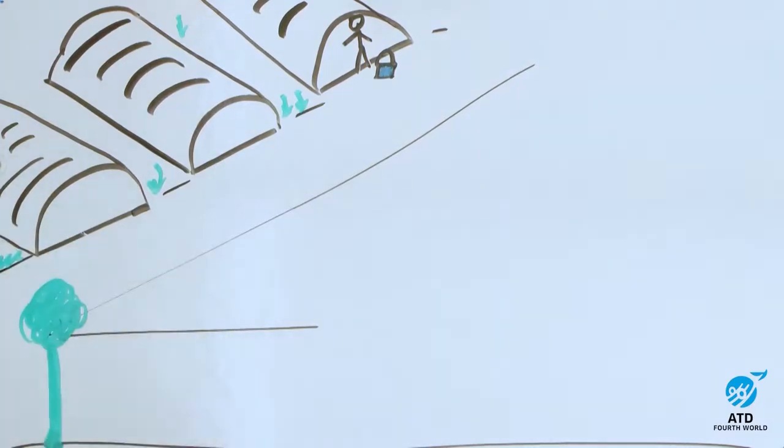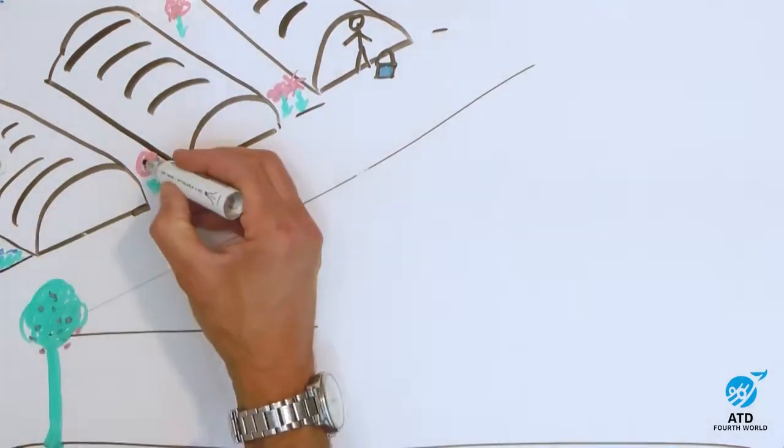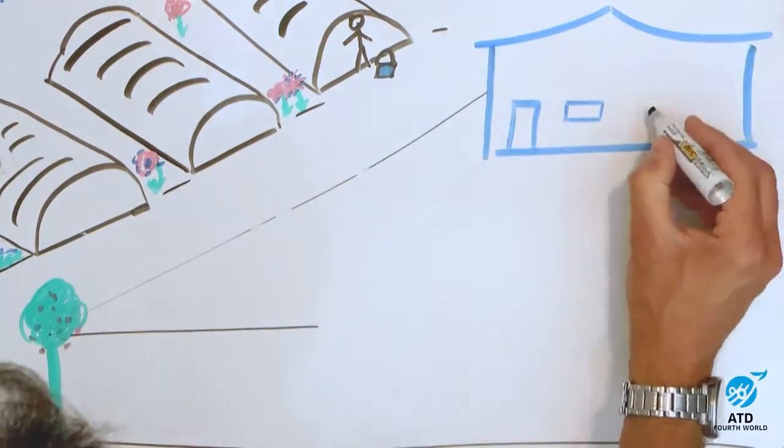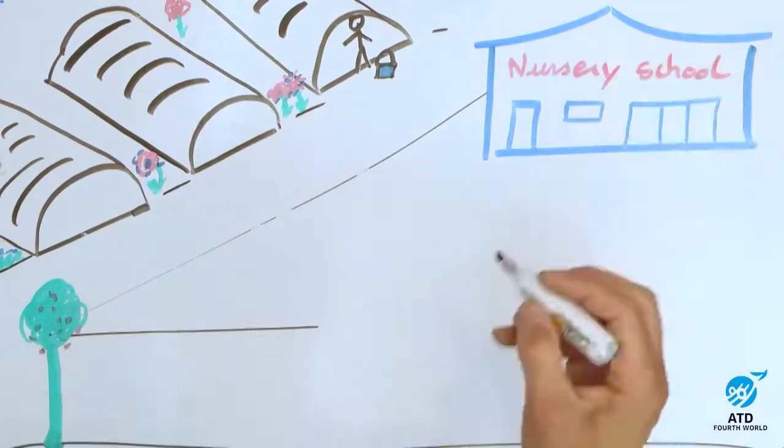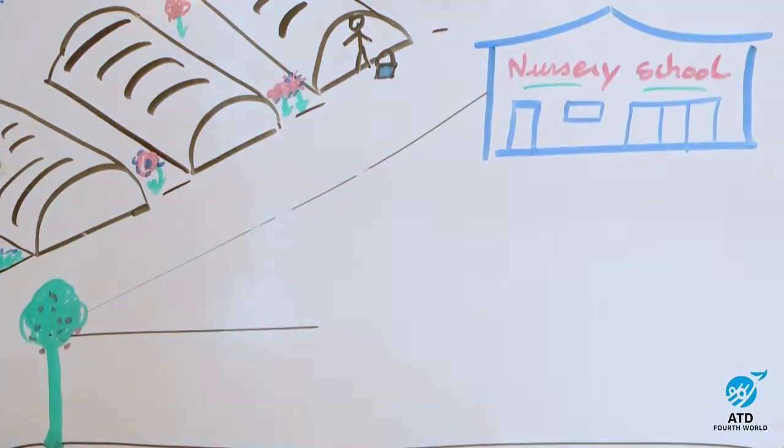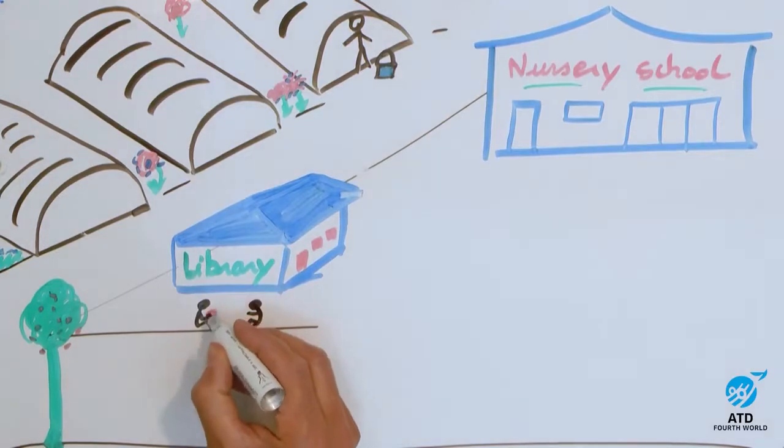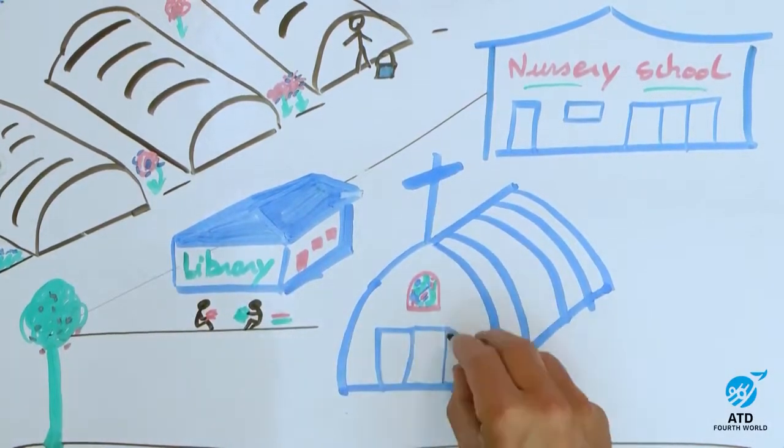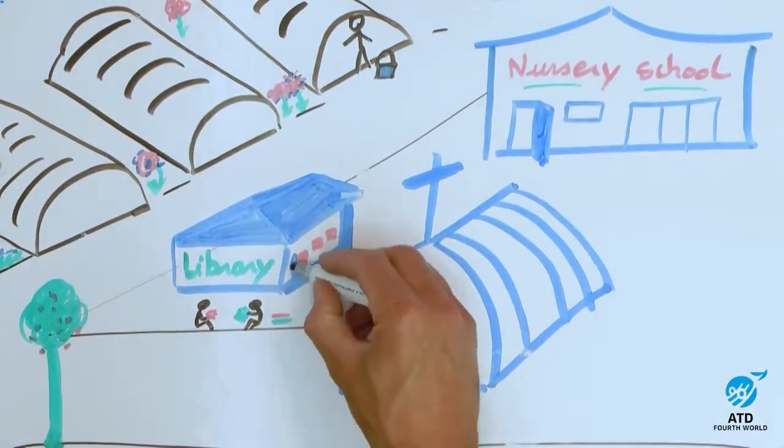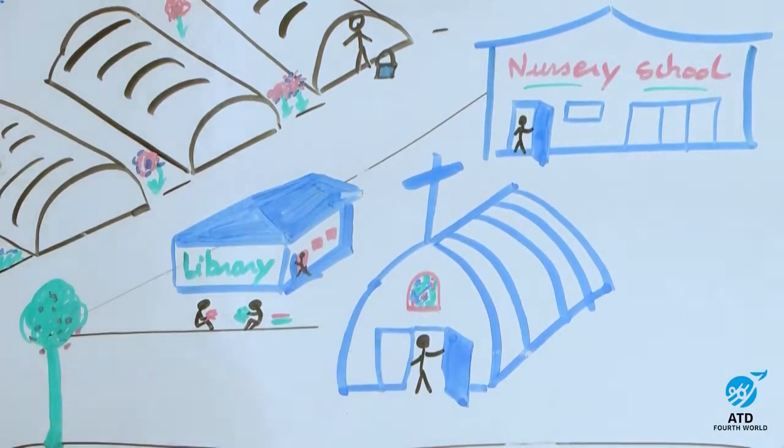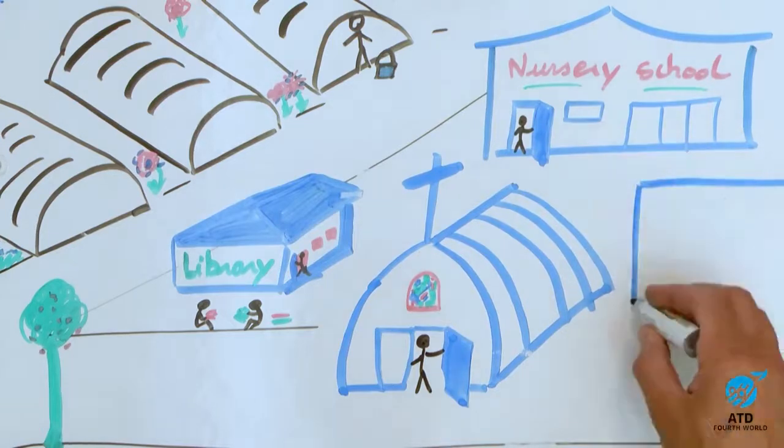Everything was done to try to make it possible for the families to live with some kind of beauty around them. Father Joseph had started by building a nursery school and a library and a chapel. They weren't palaces, but they were certainly a change to the rest of the camp. These were places where he wanted people's minds to be opened, to give them a chance to think and to do things that would enable them to express themselves to others.